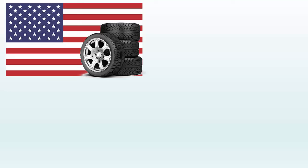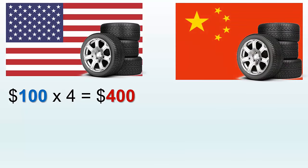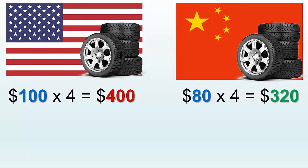Let's look at a historical example. Basic cheap tires in the United States run about $100 per tire, so a set of four costs about $400. In the early 2000s, companies in China started selling tires to distributors in the U.S. These Chinese tires, which are of comparable quality to American tires, started at around $80 a piece — so a set of four was $320. Obviously, a lot of consumers started turning to Chinese tires.